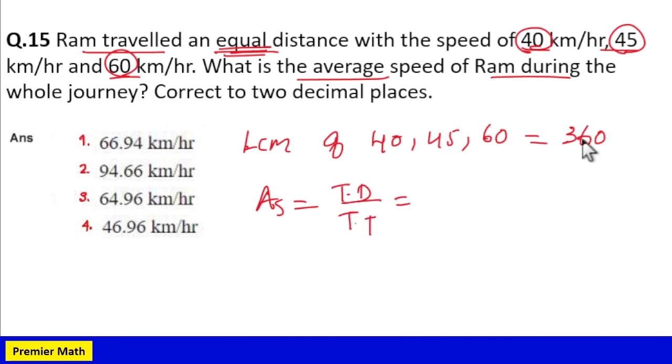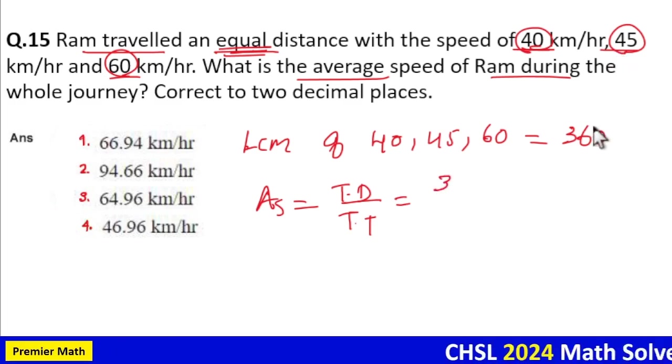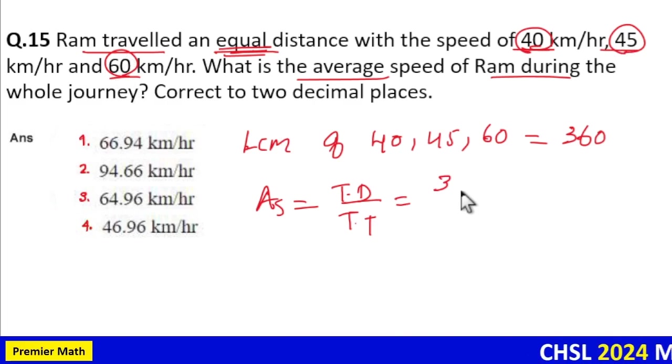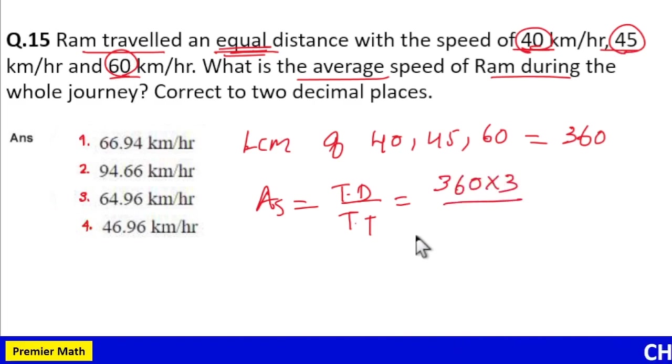In that case, total distance: first 360 covered in 40 kilometer per hour, second 360 covered in 45, and third 360 covered in 60 kilometer per hour. So total distance is 360 into 3 divided by time taken.